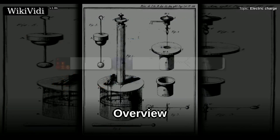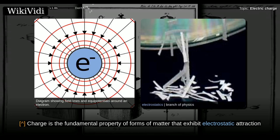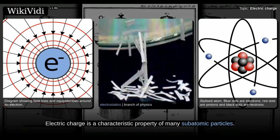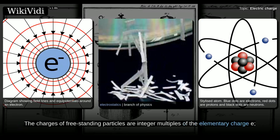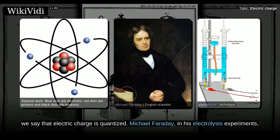Overview. Charge is the fundamental property of forms of matter that exhibit electrostatic attraction or repulsion in the presence of other matter. Electric charge is a characteristic property of many subatomic particles. The charges of freestanding particles are integer multiples of the elementary charge E. We say that electric charge is quantized.